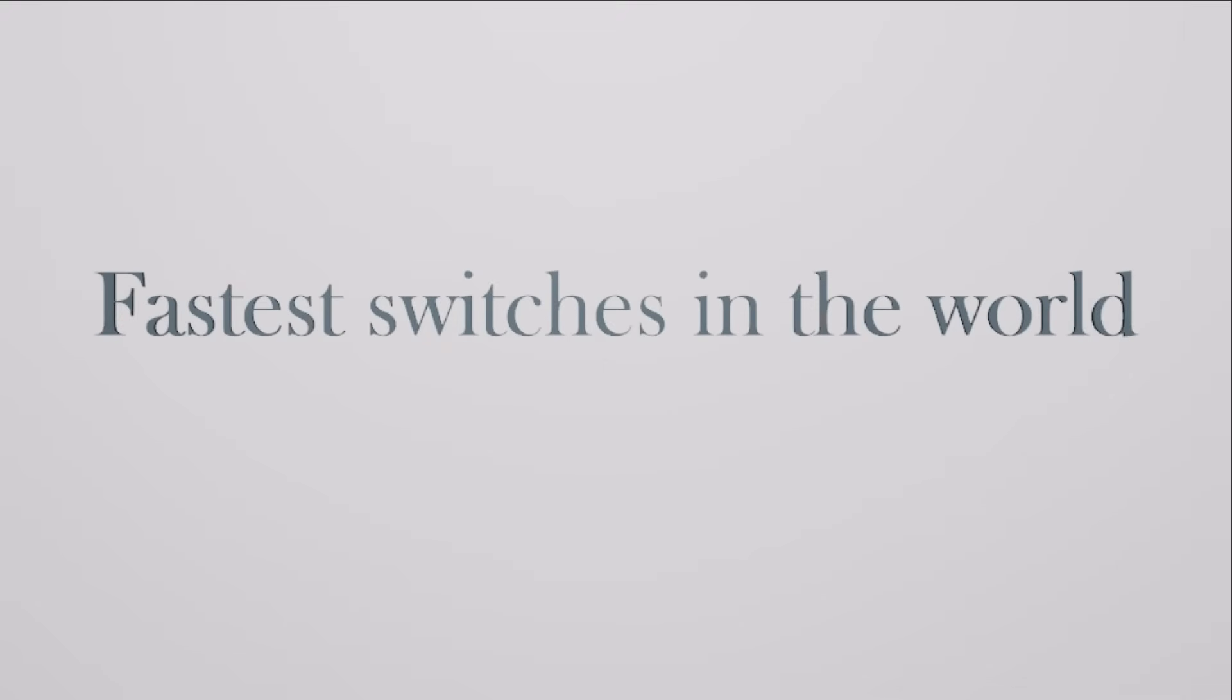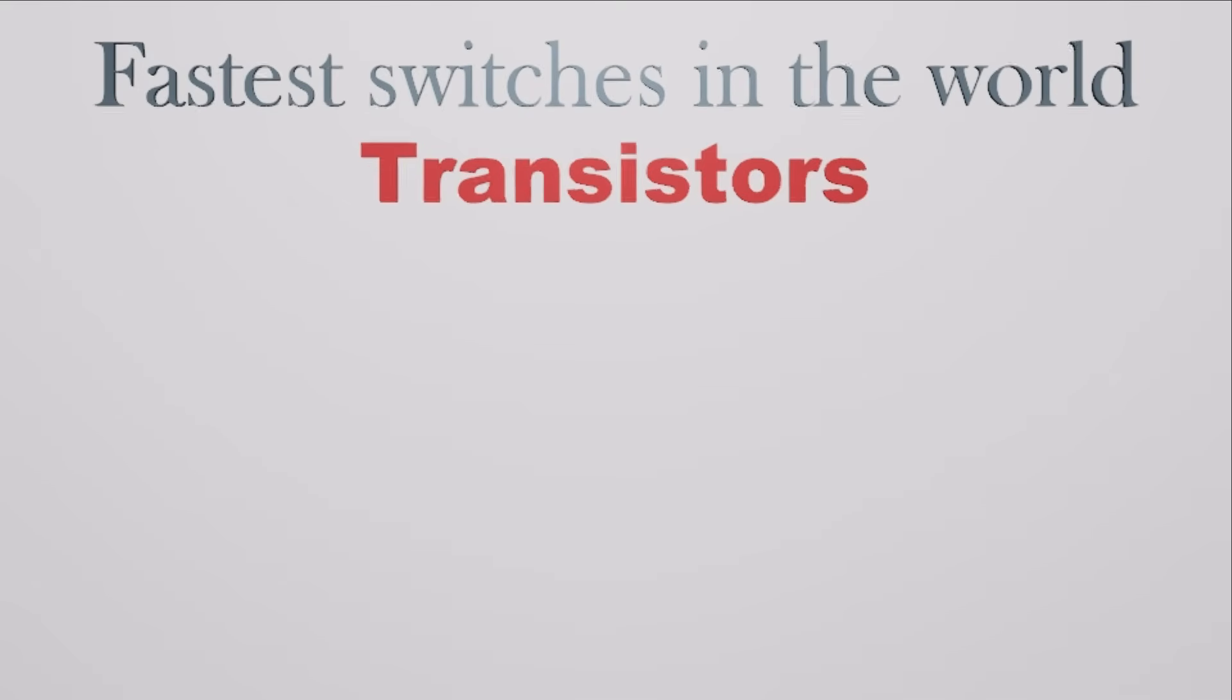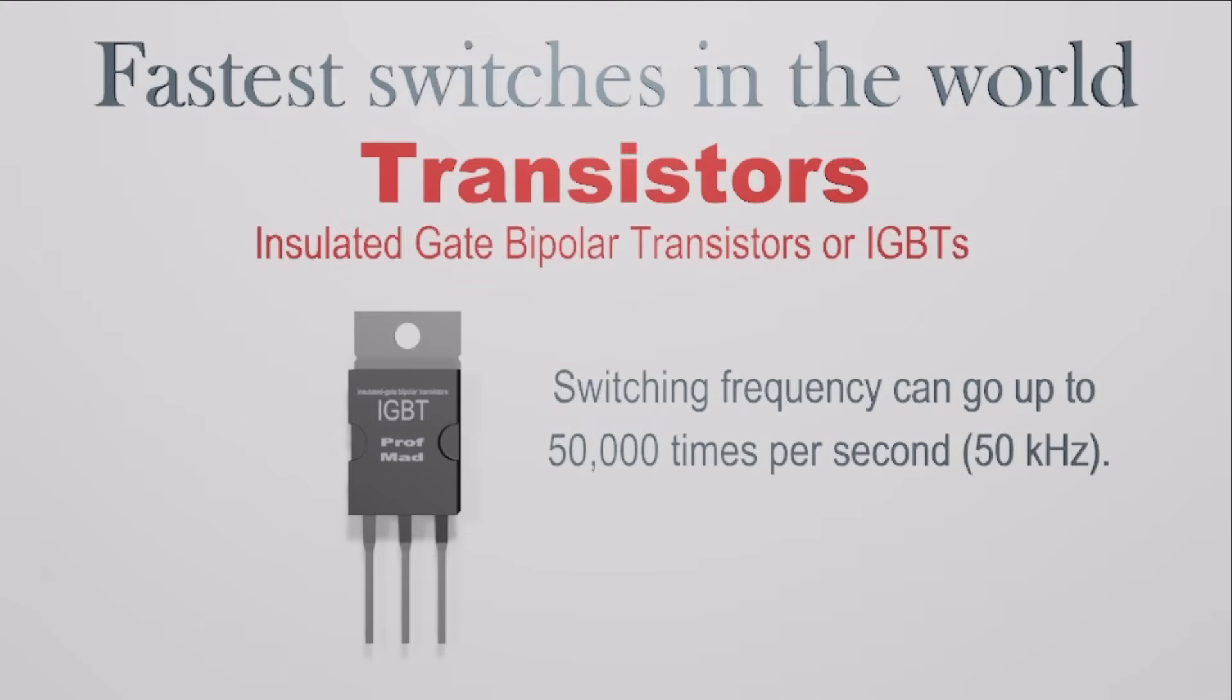That is why we use the fastest switches in the world, transistors. We can use transistors, more specifically, insulated gate bipolar transistors or IGBTs. The most common IGBT switching frequency ranges from 20 to 50 kHz.